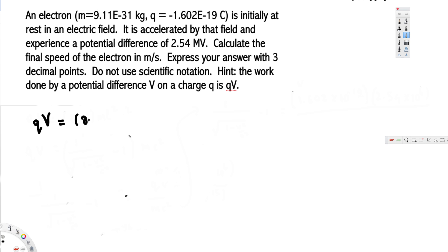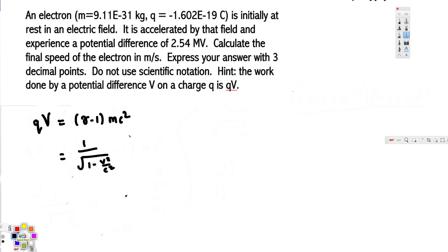So we are going to use the relativistic kinetic energy equation, which is given by (gamma minus 1) times mc squared. We know that gamma is equal to 1 over the square root of 1 minus v squared over c squared. The question is asking us to find the speed, which is this v.